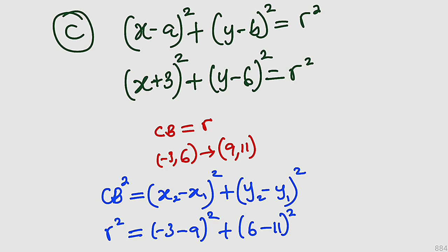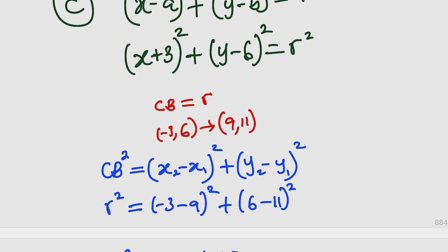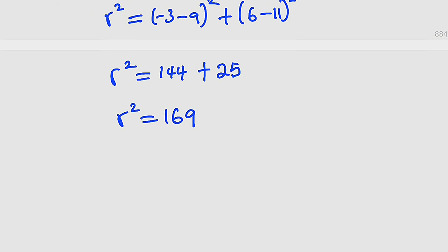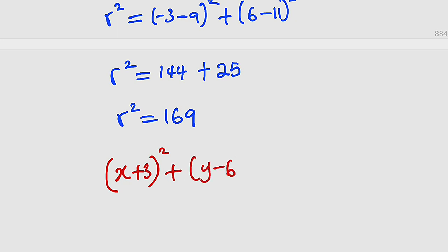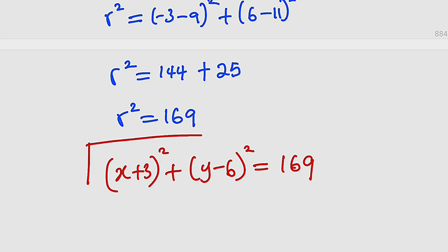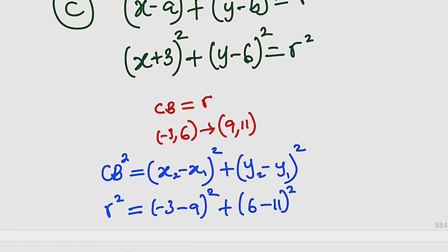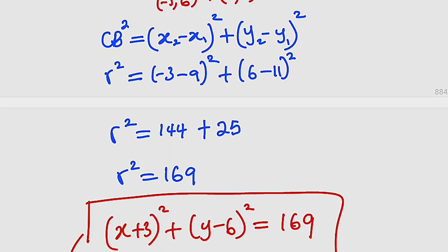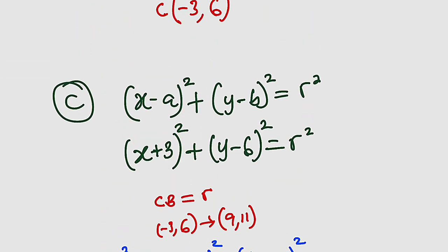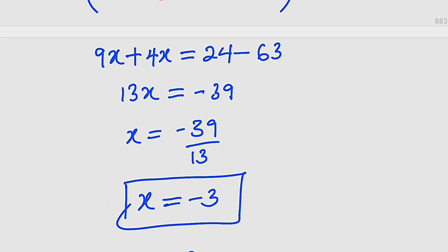Substituting r² = 169, the final equation of the circle is: (x + 3)² + (y - 6)² = 169. Thank you for watching. Do share with your learning colleagues and don't forget to subscribe to my YouTube channel for more exciting videos.